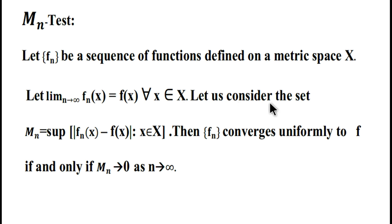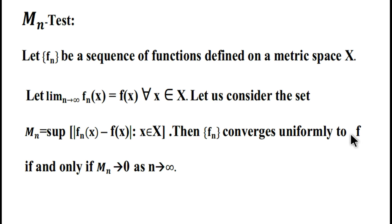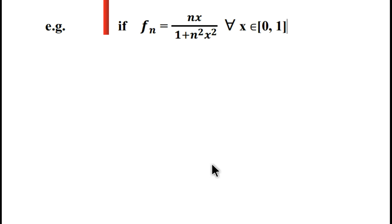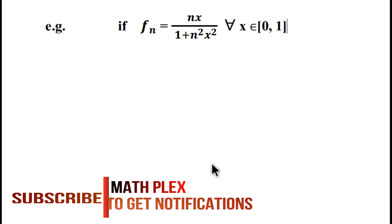Let us consider the set M_n, that is, the supremum of |f_n(x) - f(x)| for each x belonging to X. Then f_n converges uniformly to f if and only if M_n approaches zero as n approaches infinity.